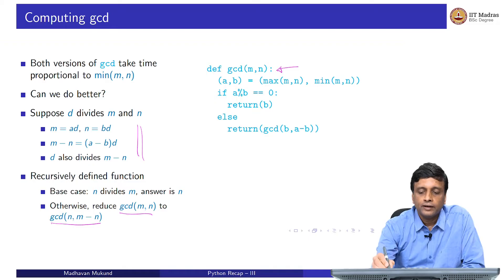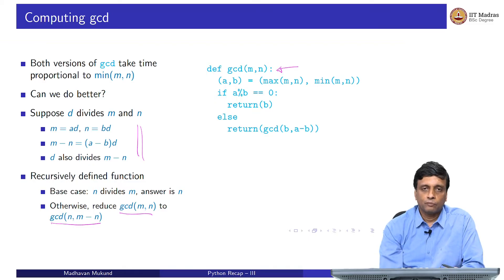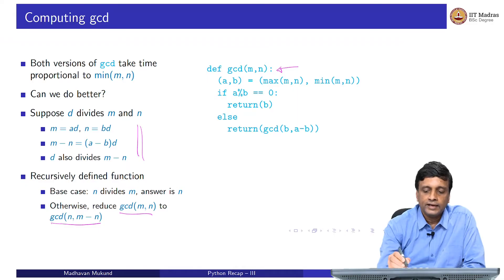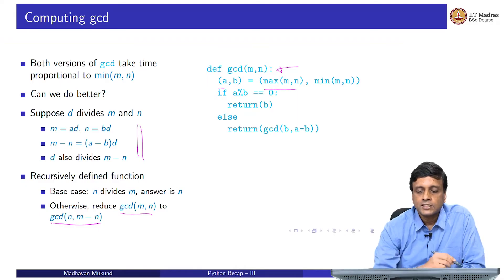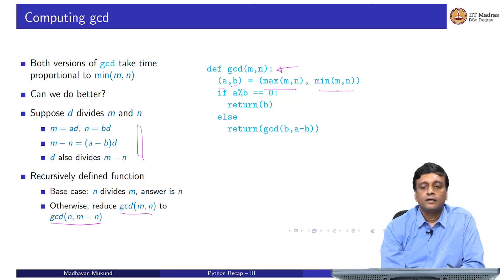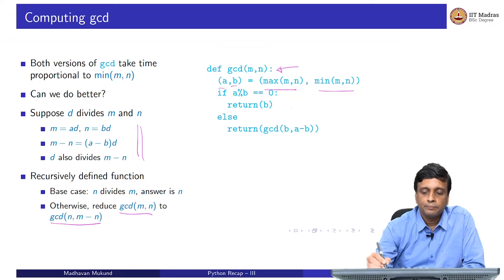We have this GCD of M comma N, but we do not know of course whether M is bigger than N or smaller than N. What we do is we first figure out which is bigger and which is smaller and call them A and B. A is the bigger one, the maximum and B is the smaller one, the minimum. Now if the smaller one that is B divides A, so A divided by B has remainder 0, then B is already the GCD and I am done. This is the base case.